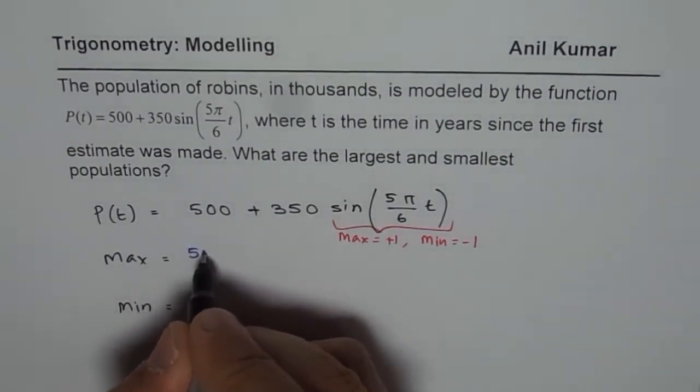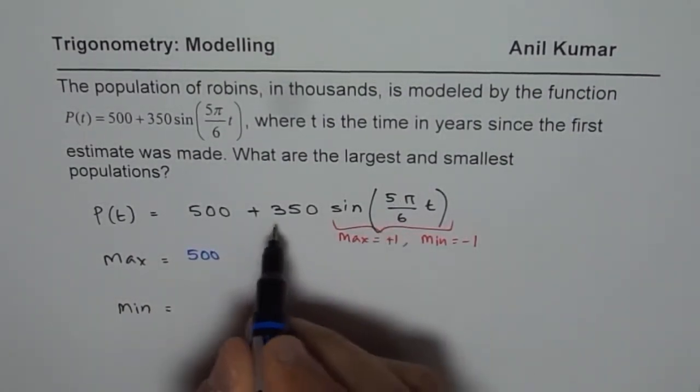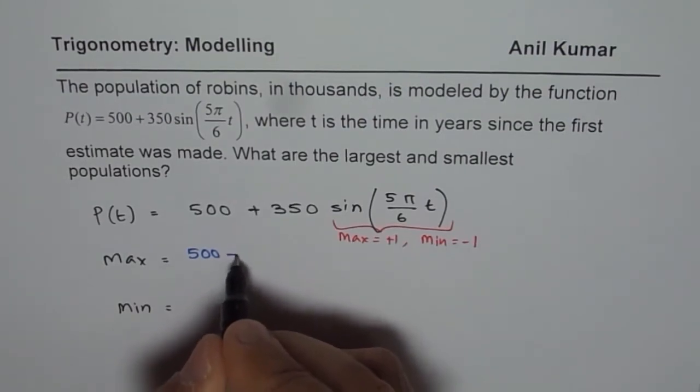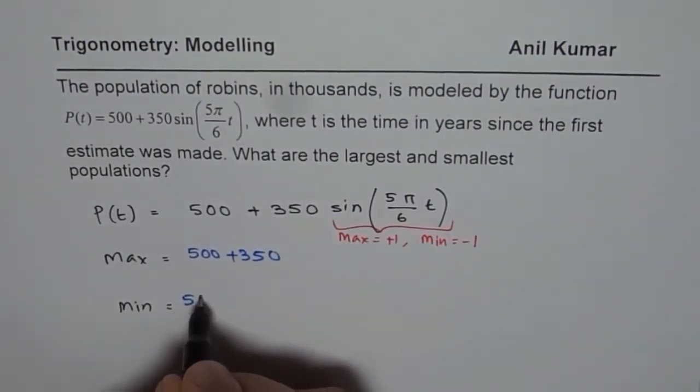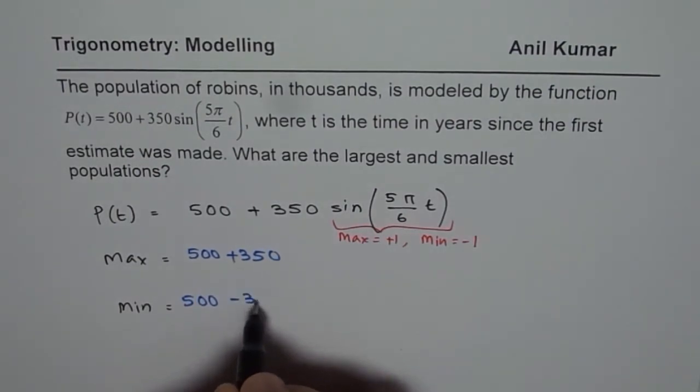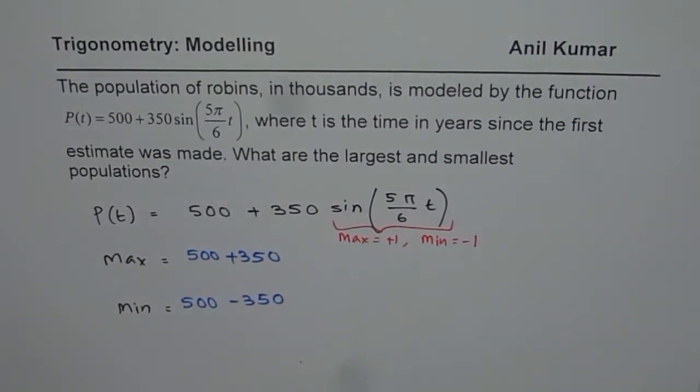The maximum will be 500, when sine is +1, times 350, which gives +350. When it is -1, it will be 500 - 350. That is the solution.